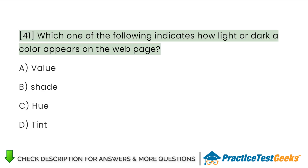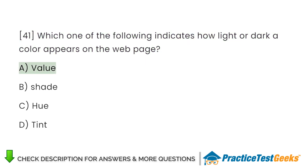Which one of the following indicates how light or dark a color appears on the webpage? A. Value. B. Shade. C. Hue. D. Tint.